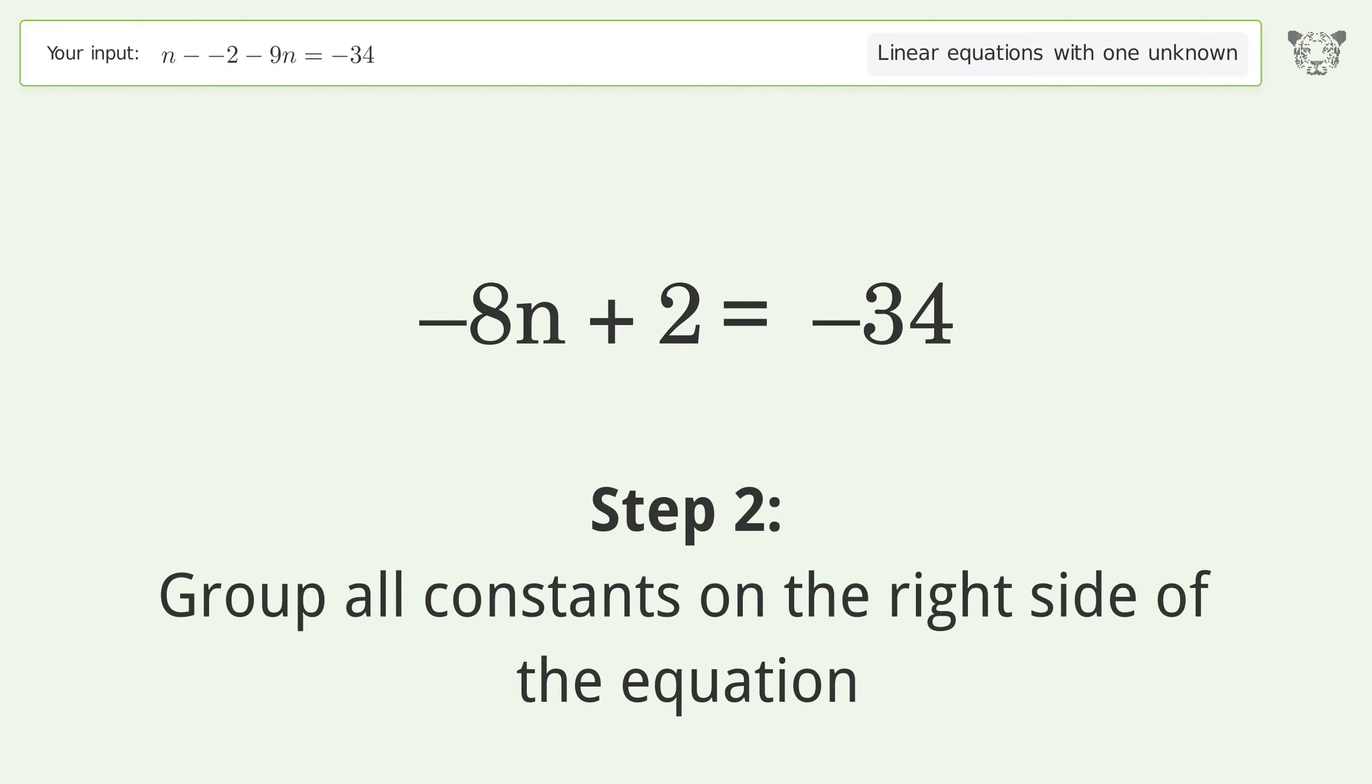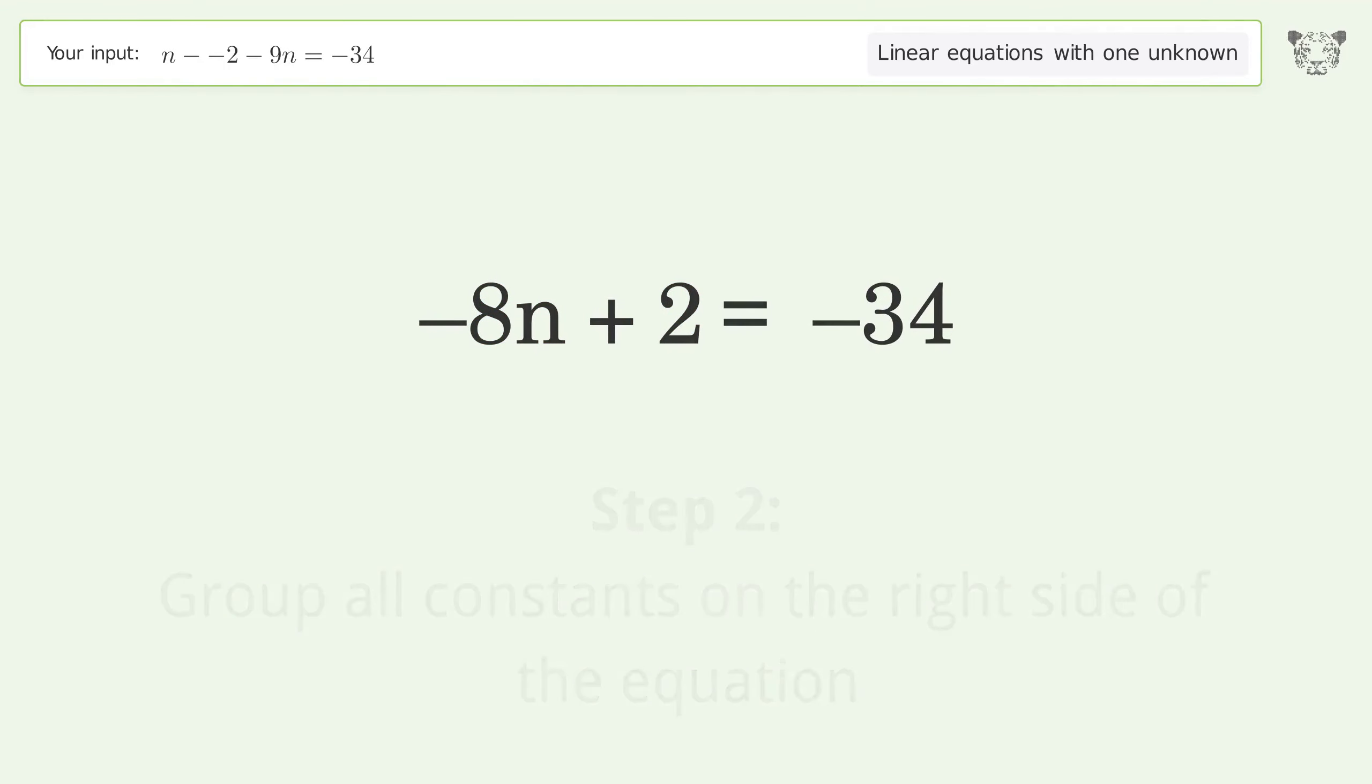Group all constants on the right side of the equation. Subtract 2 from both sides. Simplify the arithmetic.